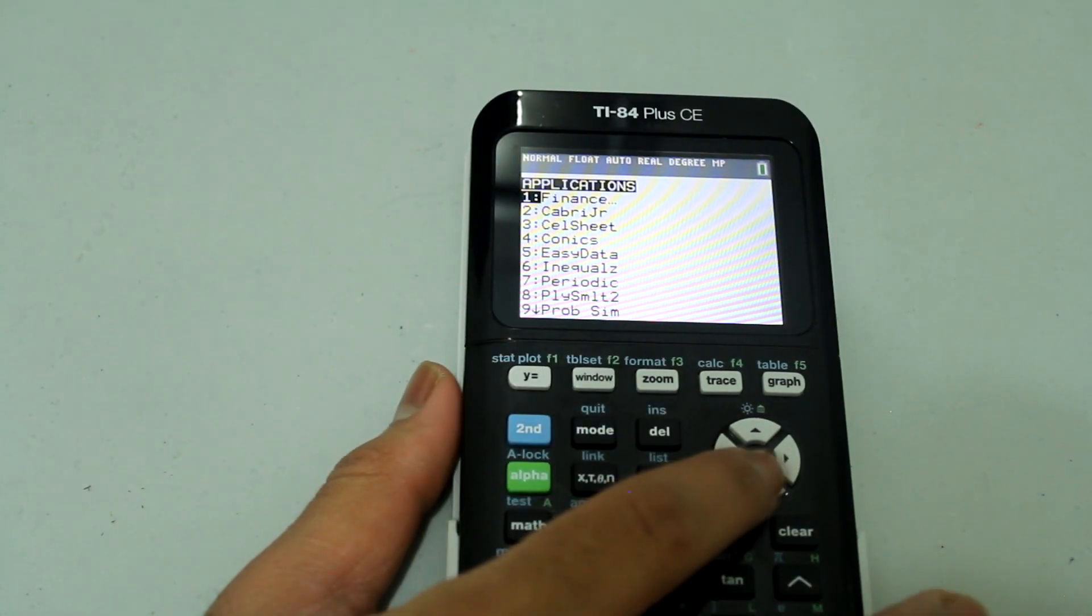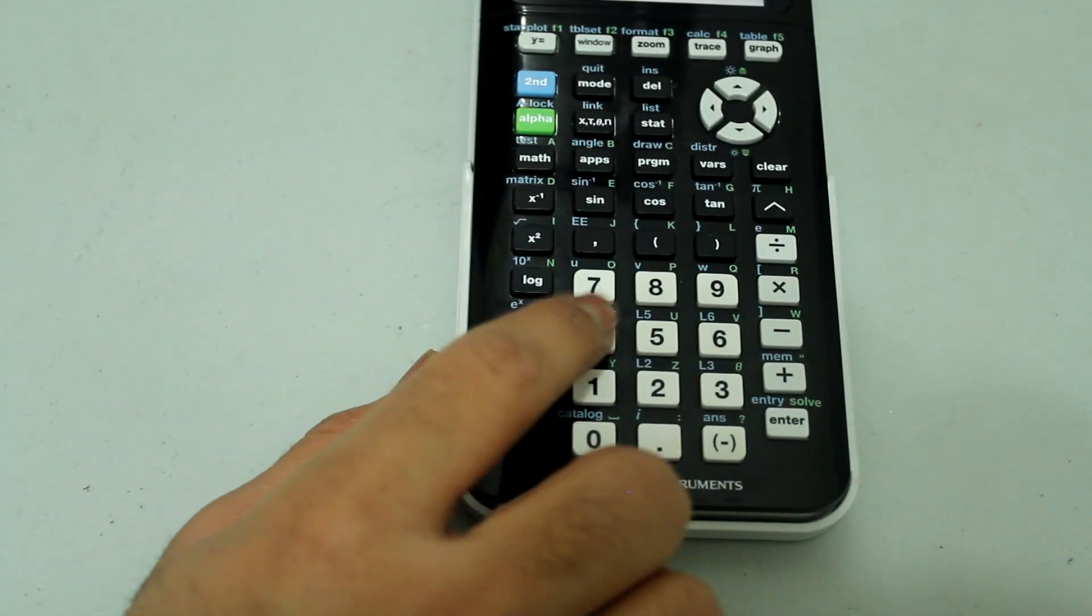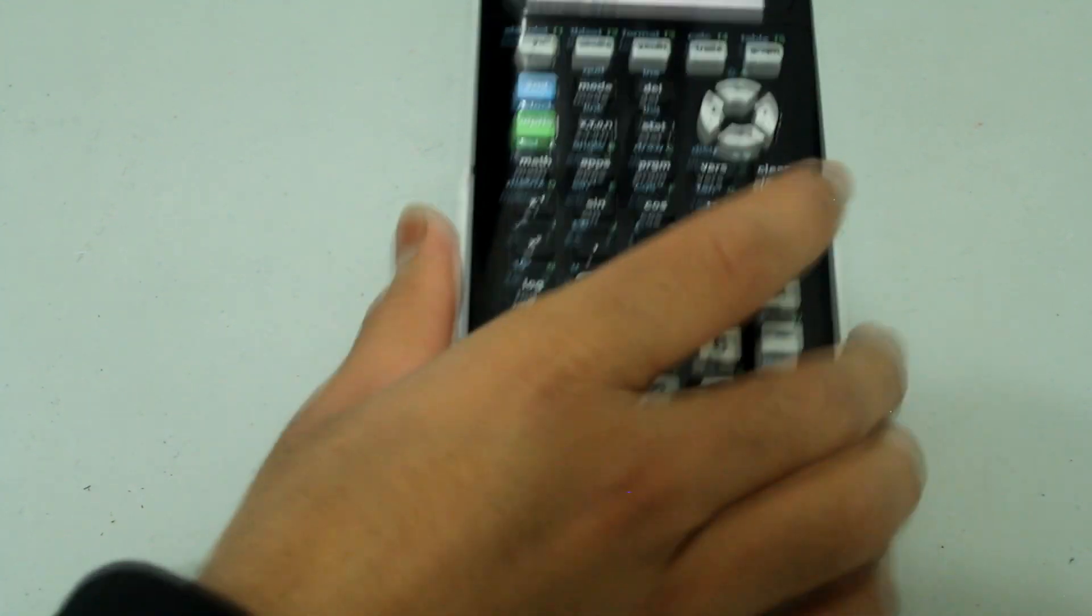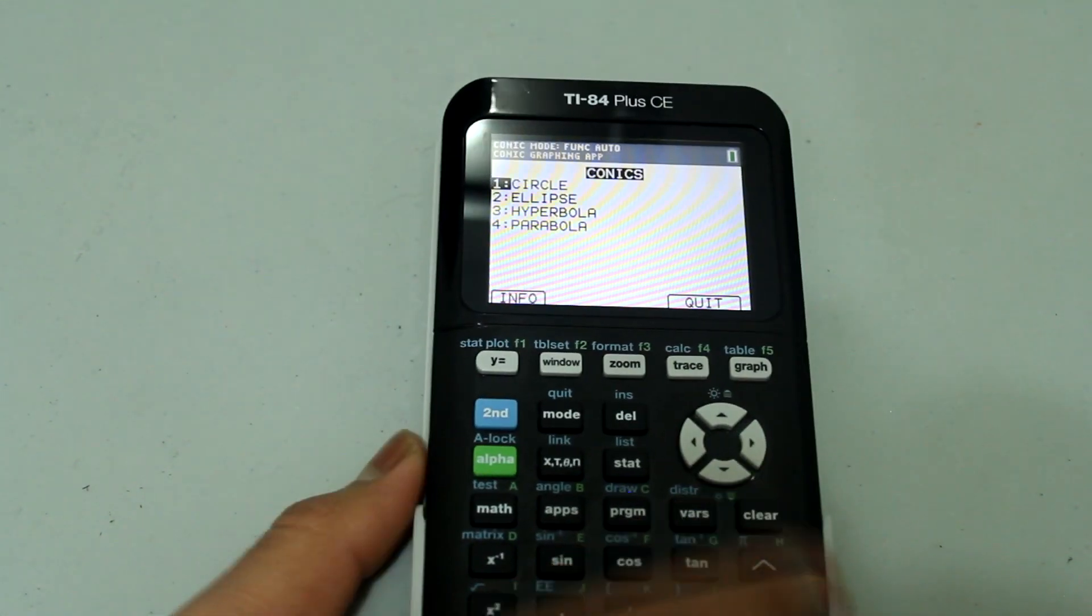You can either arrow down until you go to conics and then press enter or you can just press number 4 on the keypad and that will select the conics option.